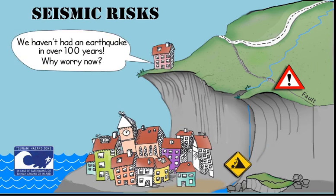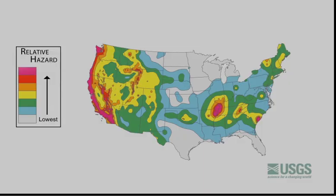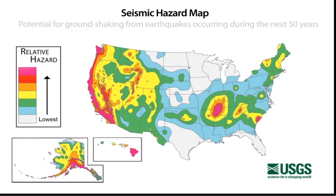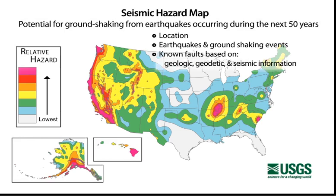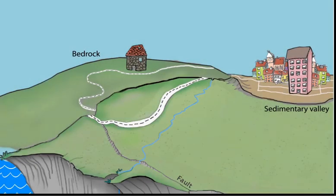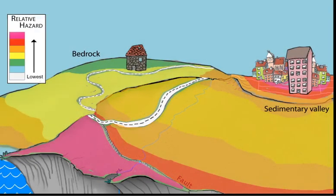Risk and the perception of risk are not always aligned. A seismic hazard map assesses the possibility of future ground shaking at a location based on the past history of nearby earthquakes and ground shaking, plus what we know about faults in the area from geologic, geodetic, and seismological information. The hazard also depends on how the ground responds to shaking, which depends on the subsurface rock layers.